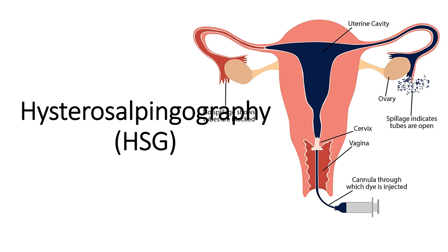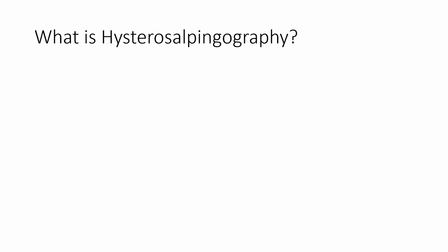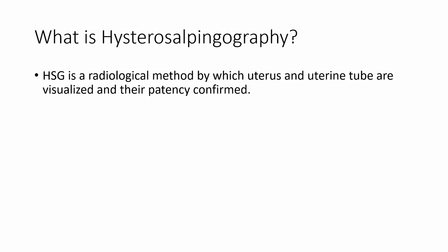Welcome to the Viva Boss of Anatomy. Today we are going to learn about Histosalpingiography, in short also known as HST. First we will like to know what is Histosalpingiography. Histosalpingiography is a radiological method by which the uterus and uterine tube are visualized and their patency confirmed.